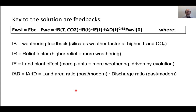What's really key in all of this are the feedbacks. There are lots of different feedbacks to the weathering of silicates. The burial-minus-weathering flux has a weathering feedback that depends on temperature and CO2 concentration — silicates weather faster at higher temperature and CO2. There's a relief factor based on topographic relief: higher relief means more weathering. There's a land plant effect: more plants means more weathering, and this changes through time because of evolution.